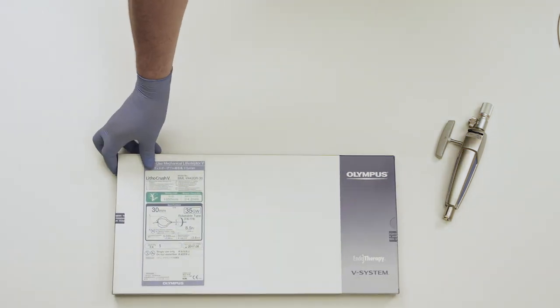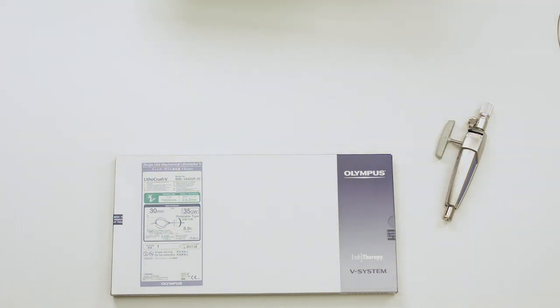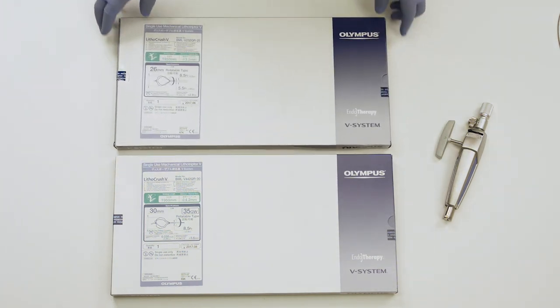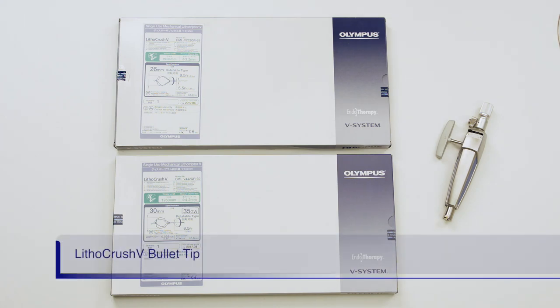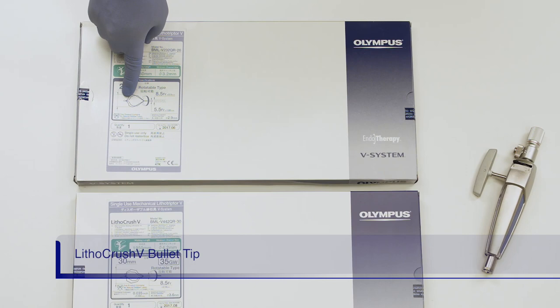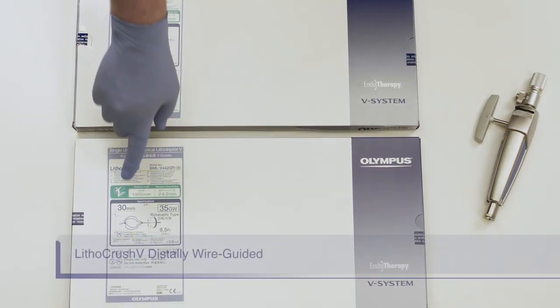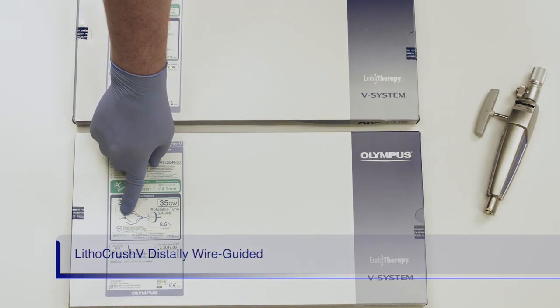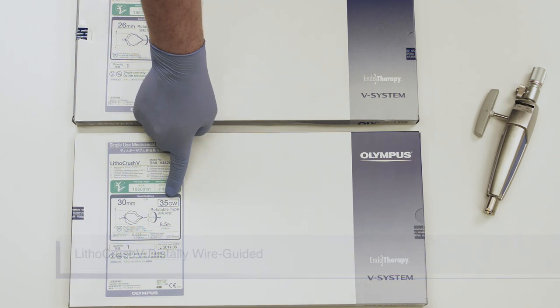Let's review the assembly of the LithoCrush V mechanical lithotriptor. There are two different versions of LithoCrush V. One is the distally wire-guided version. The other is the rotatable bullet tip version. Be certain of which version you have by looking on the box, which will indicate either bullet tip or distally wire-guided. On the distally wire-guided version, there is an indicator for compatible guide wire size.